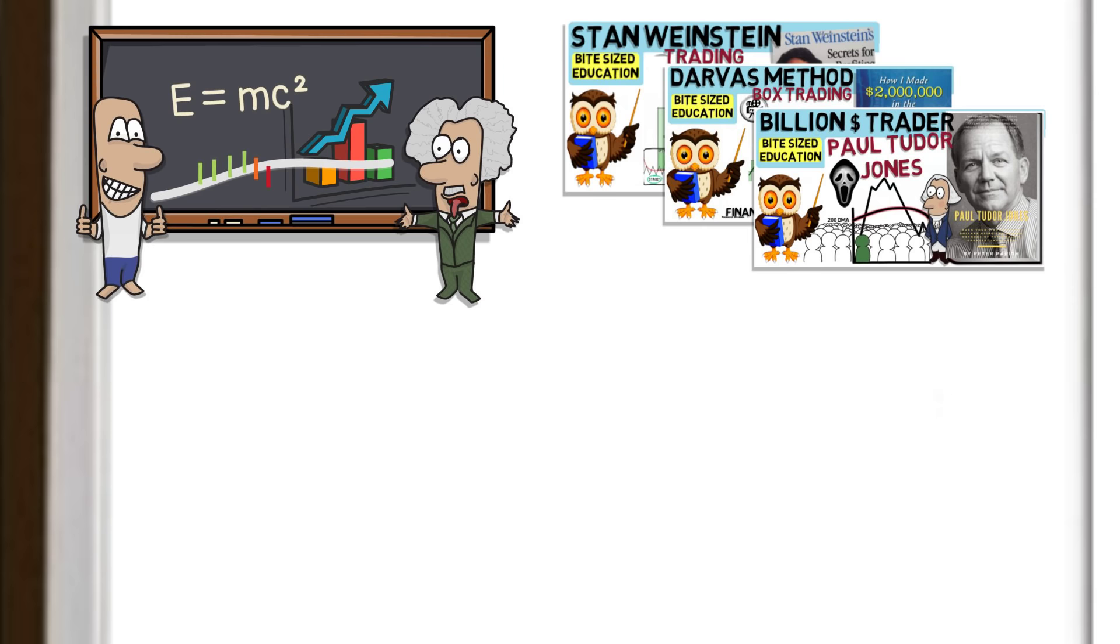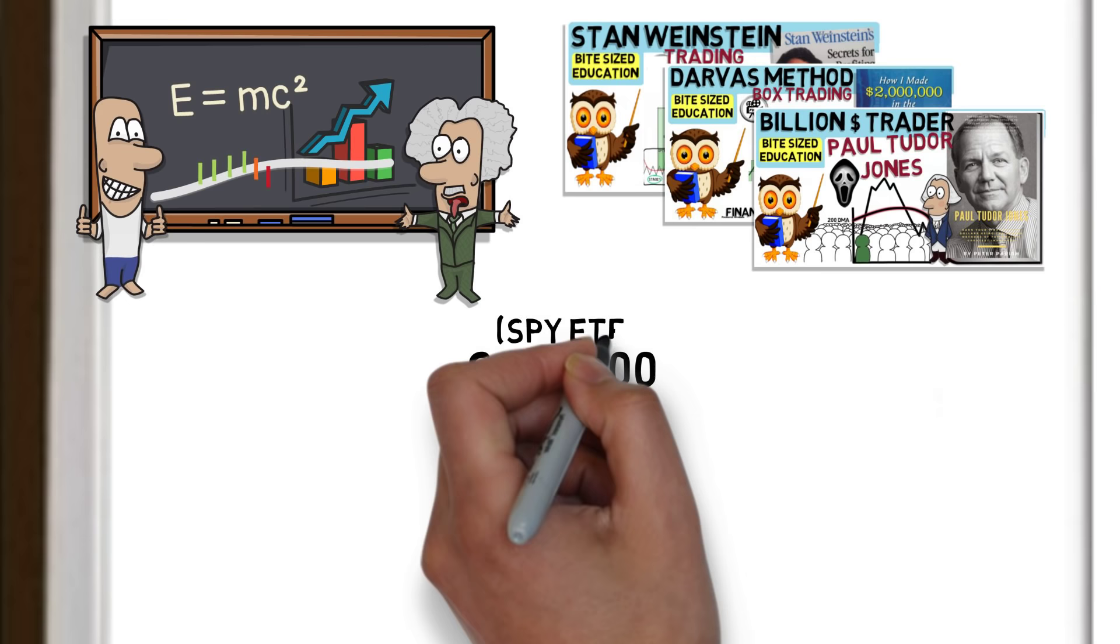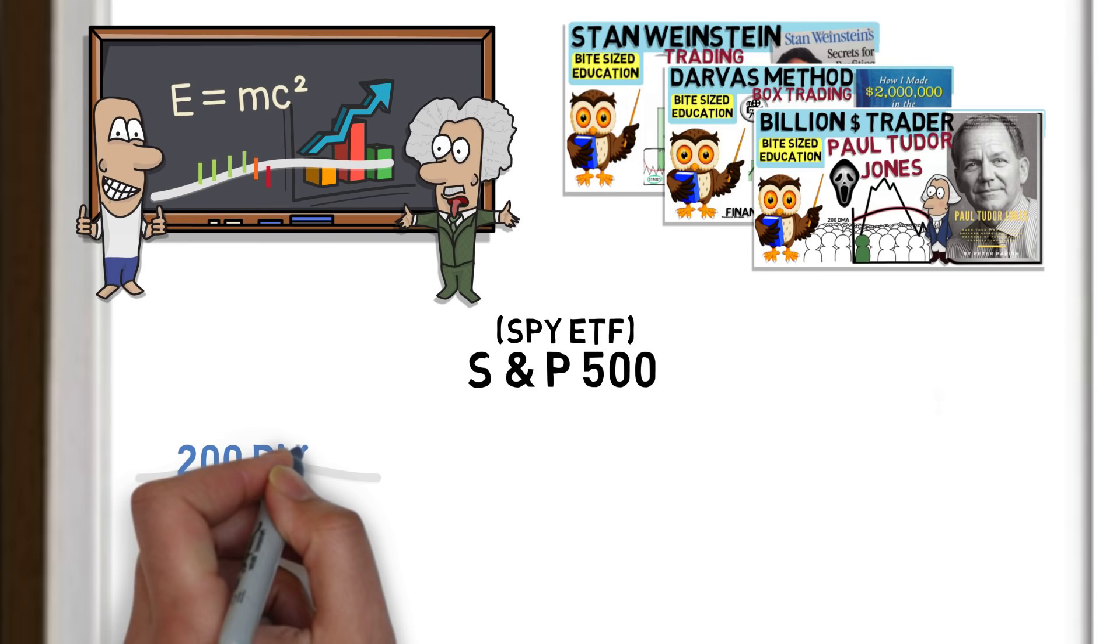The book uses the S&P 500 or SPY ETF as the benchmark when comparing the moving averages. The first to be covered is the 200 day moving average, described as the most popular and used by the likes of market wizard Paul Tudor Jones.